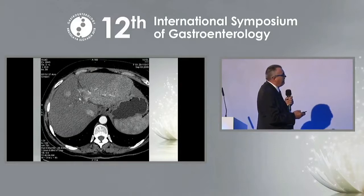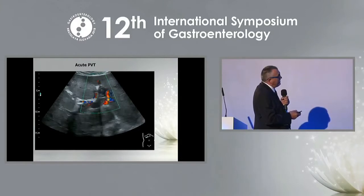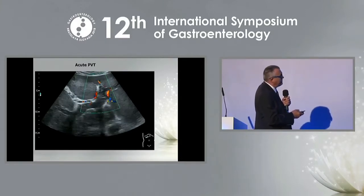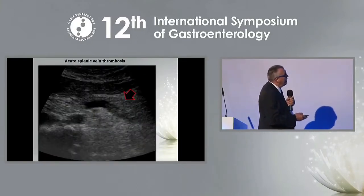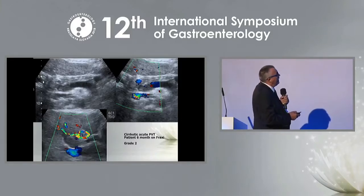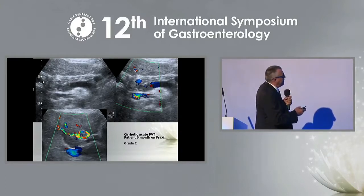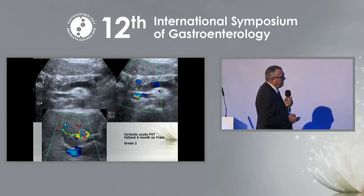Another method is computed tomography, which also shows arterial blood flow around the thrombus. Porto-portal collaterals form very rapidly around the thrombus. Here is thrombosis of the splenic vein, which occurs frequently in pancreatitis, and thrombosis of the splenic vein and portal vein in a patient with liver cirrhosis, with extension even to the right branch of the portal vein.